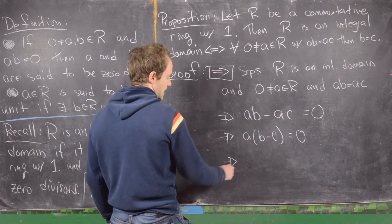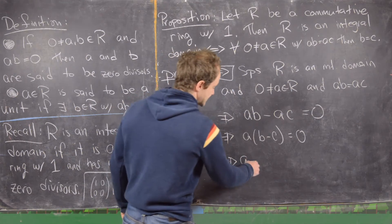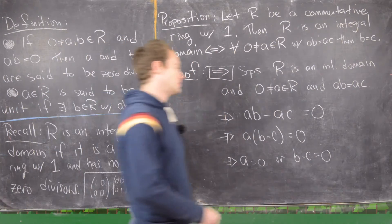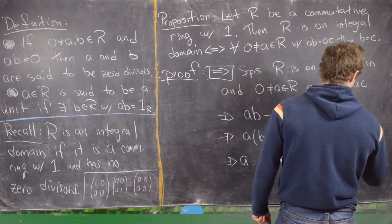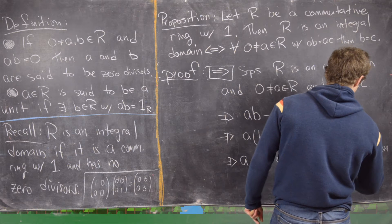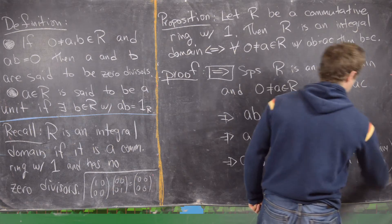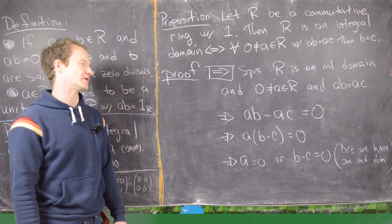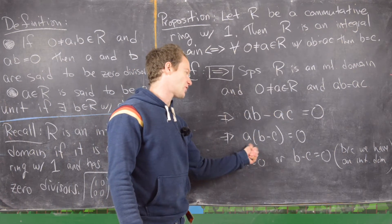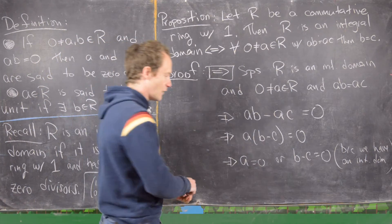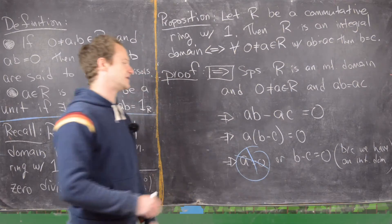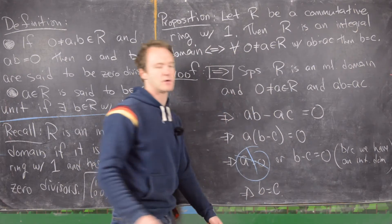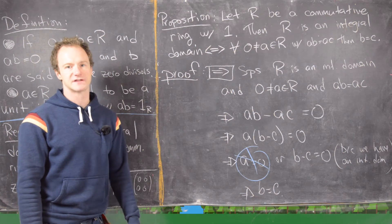This tells us that A equals zero or B minus C equals zero. This is true because we have an integral domain — no zero divisors means if a product equals zero, one factor must be zero. Since A is not equal to zero by assumption, B minus C equals zero, i.e., B equals C, which is what we wanted.